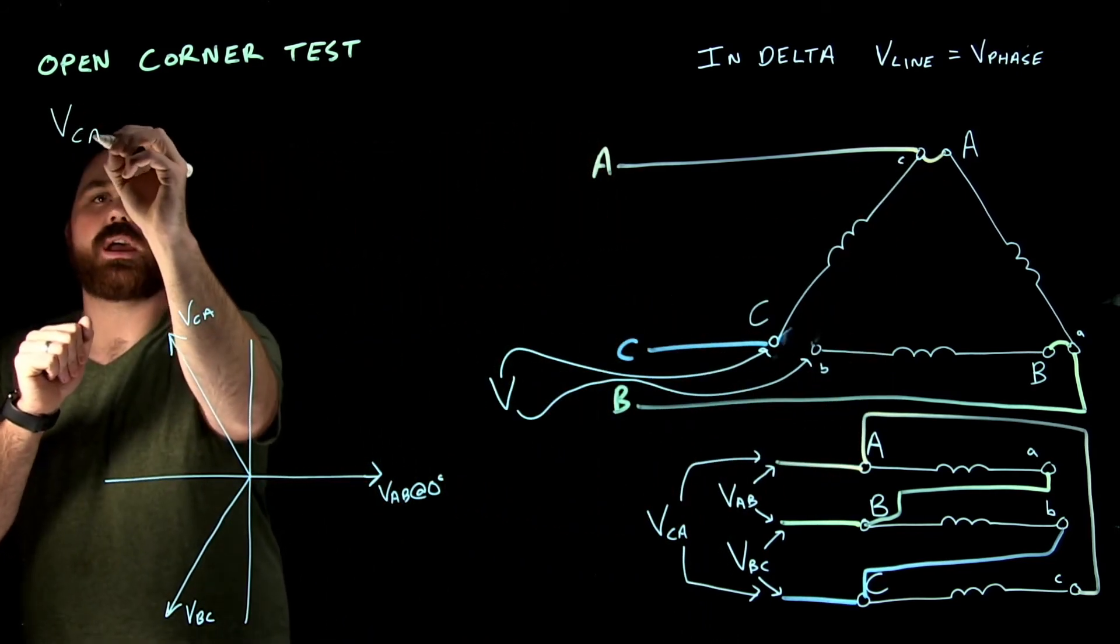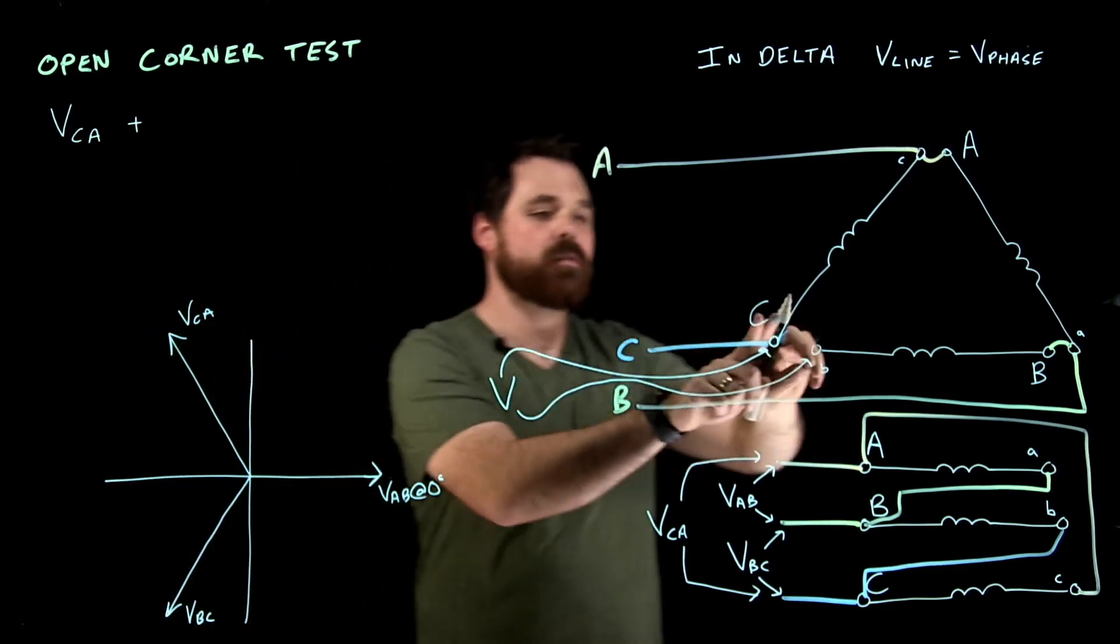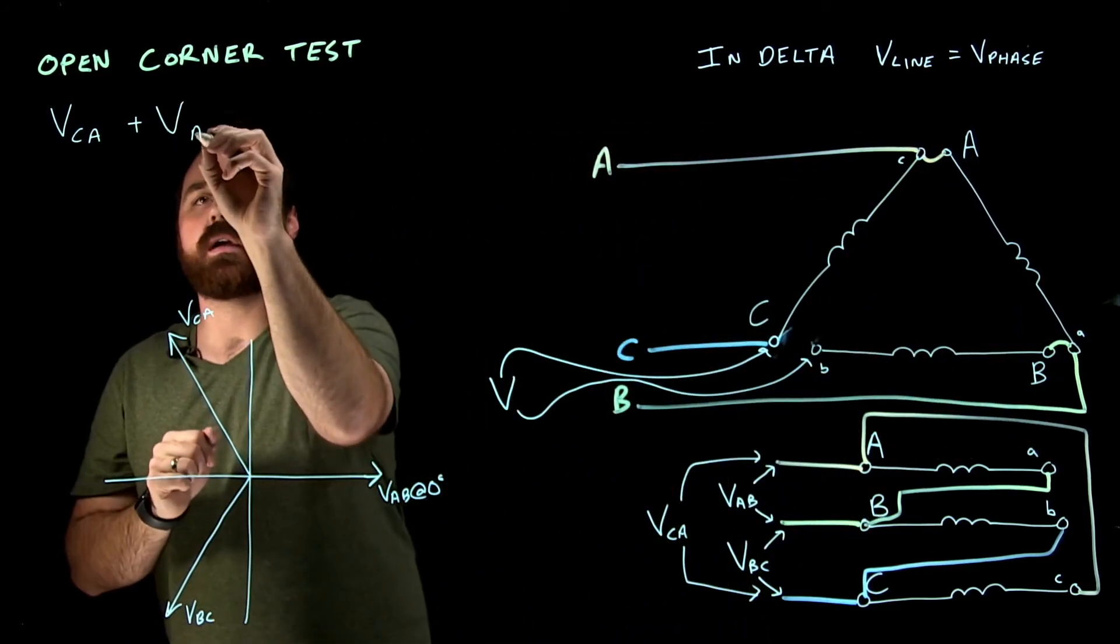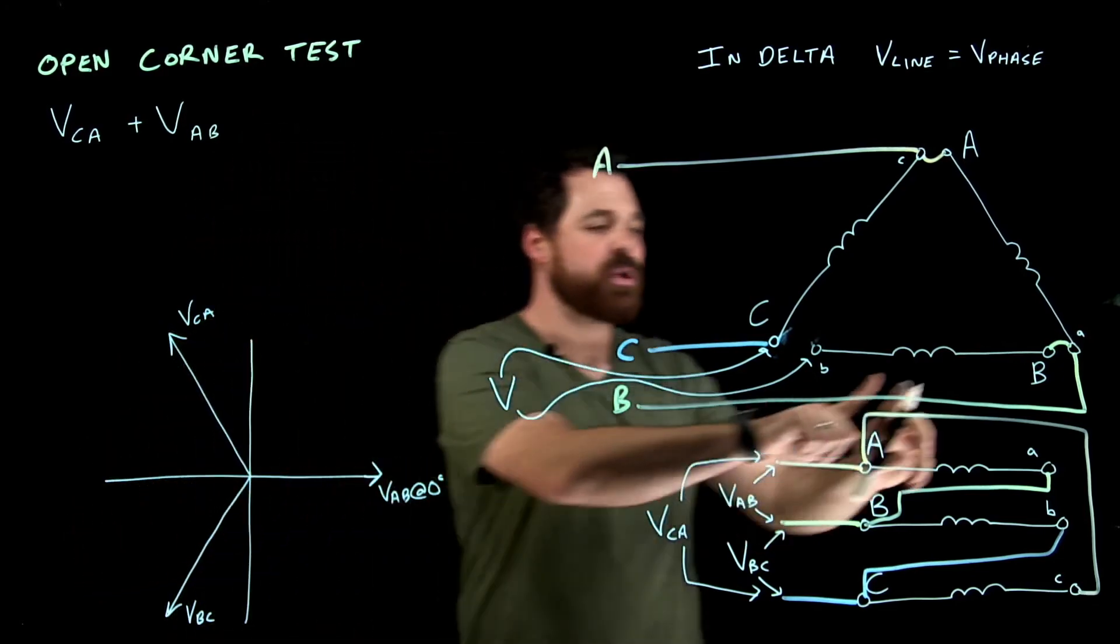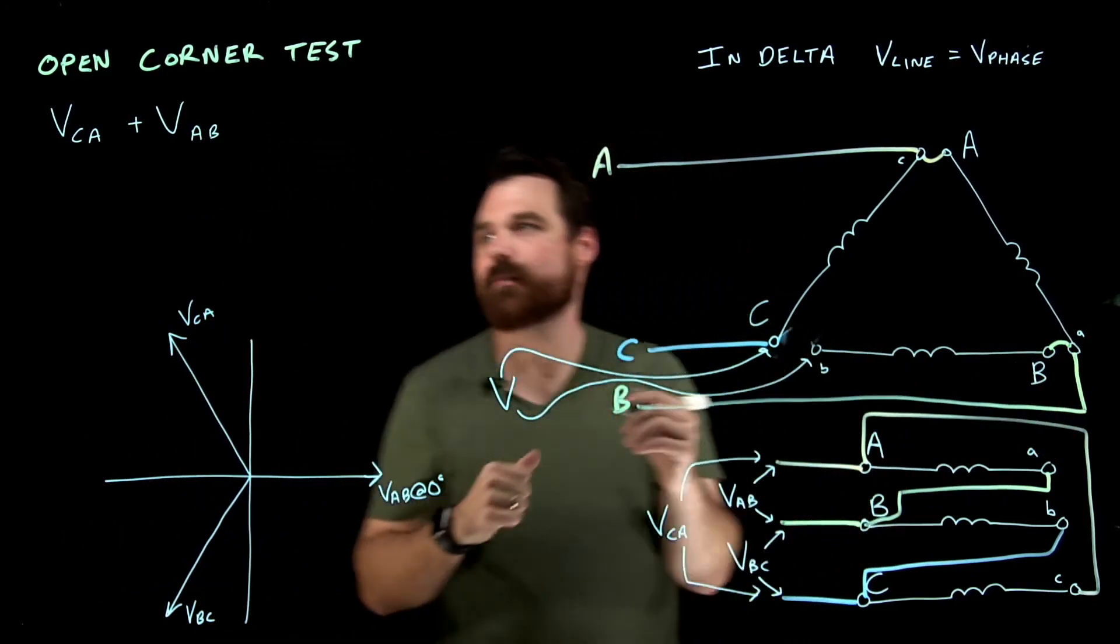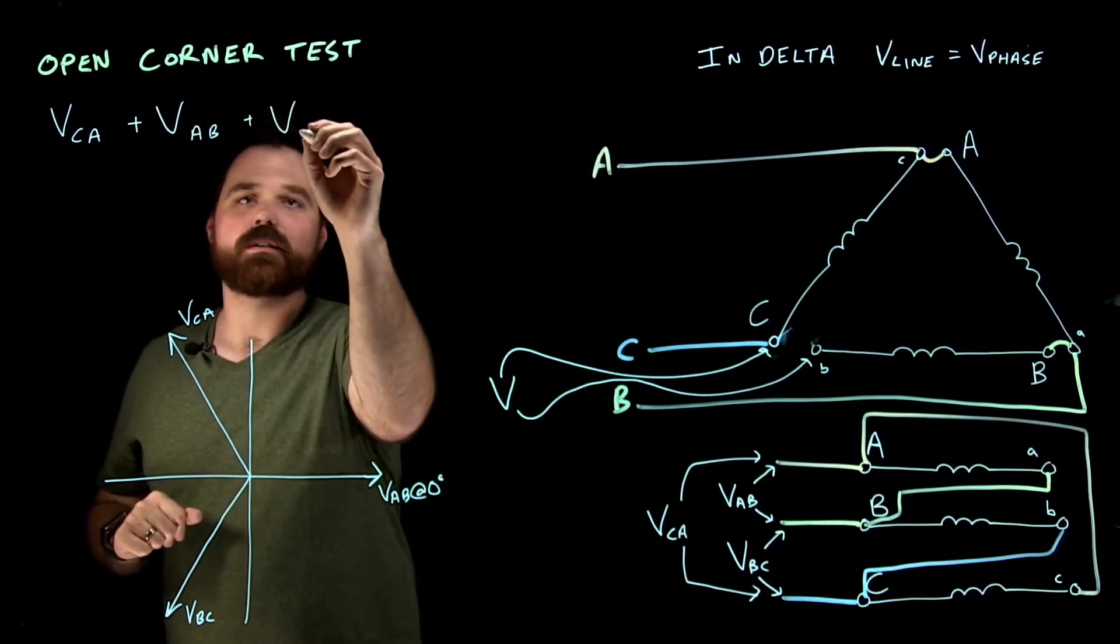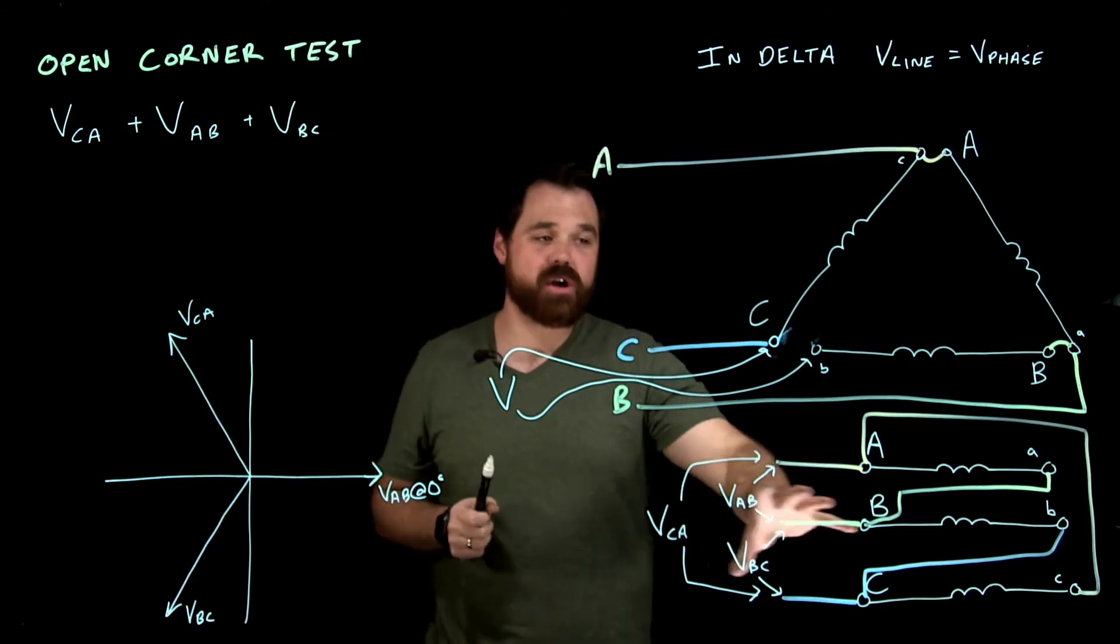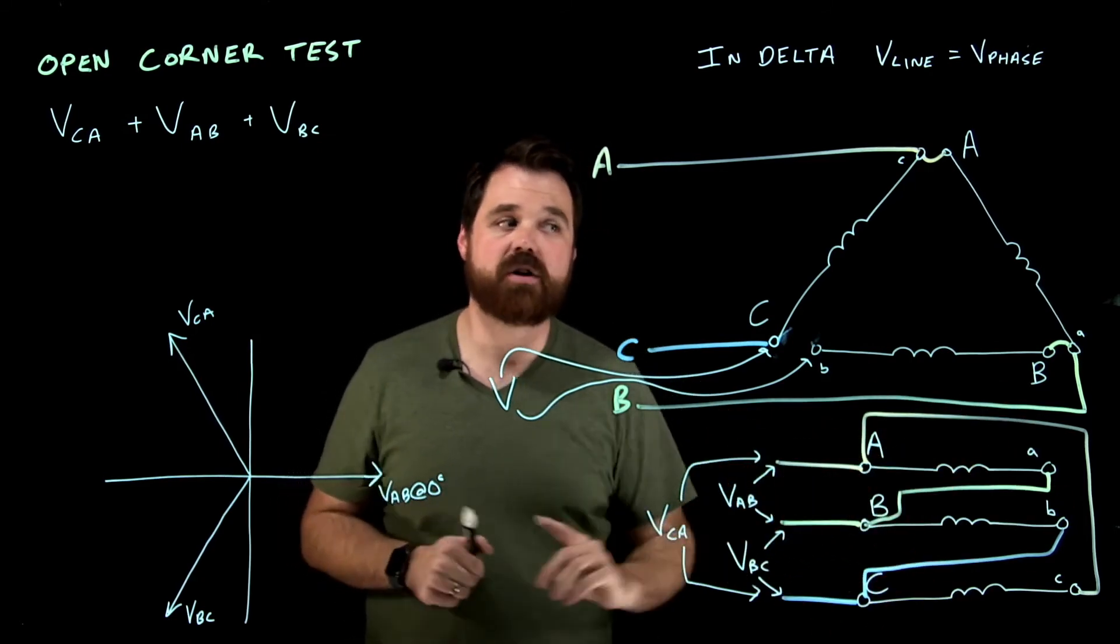So V C to A plus A to B, V A to B, plus B to little B which would be C, plus B to C.